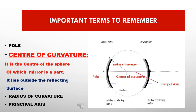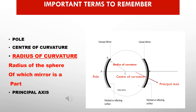The Center of Curvature is the center of the sphere of which the mirror is a part. It lies outside the reflecting surface. The Radius of Curvature is the radius of the sphere of which the mirror is a part — it is represented as CA. For the concave mirror, CA is the radius of curvature. For the convex mirror it is also the same, because both mirrors are parts of the same sphere.